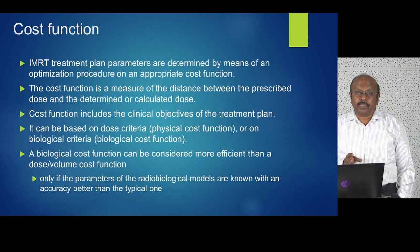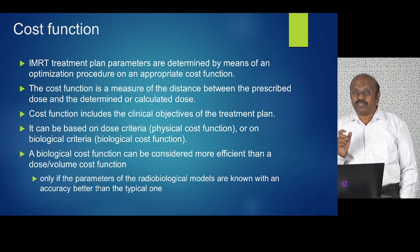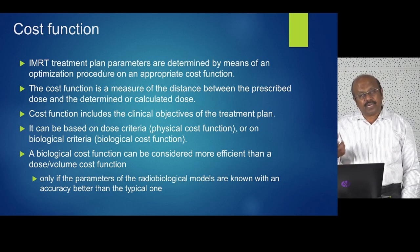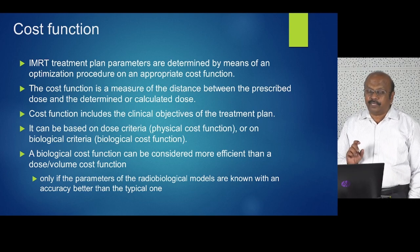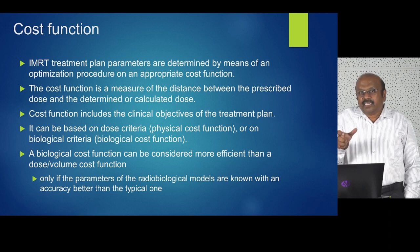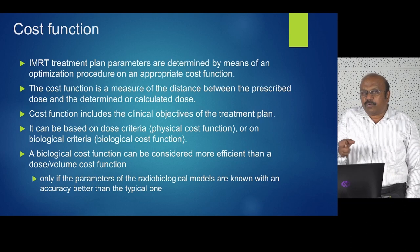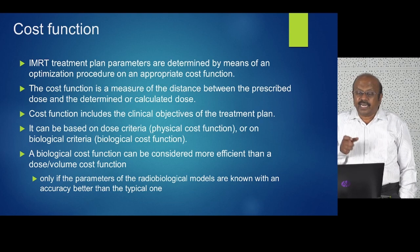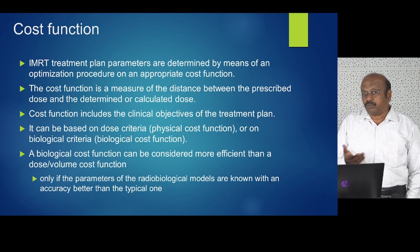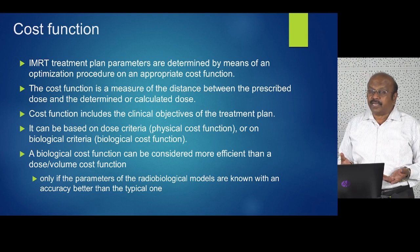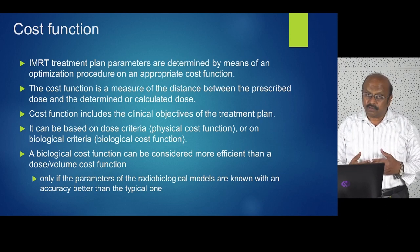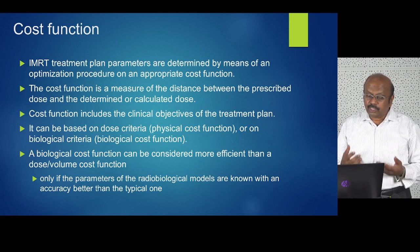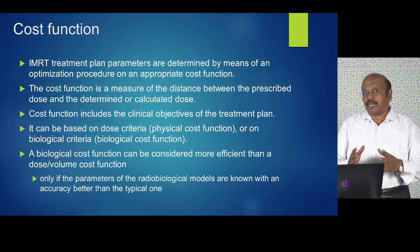IMRT treatment plan parameters are determined by an optimization procedure on an appropriate cost function. The cost function is the measure of the difference between the prescribed dose and the calculated dose — you prescribe a dose, you calculate a dose, and the difference should be as small as possible. The cost function includes the clinical objectives of the treatment plan. It can be based on dose criteria, called the physical cost function, or biological criteria, called the biological cost function. The biological cost function is considered more efficient, but you must know the radiobiological model parameters very well.